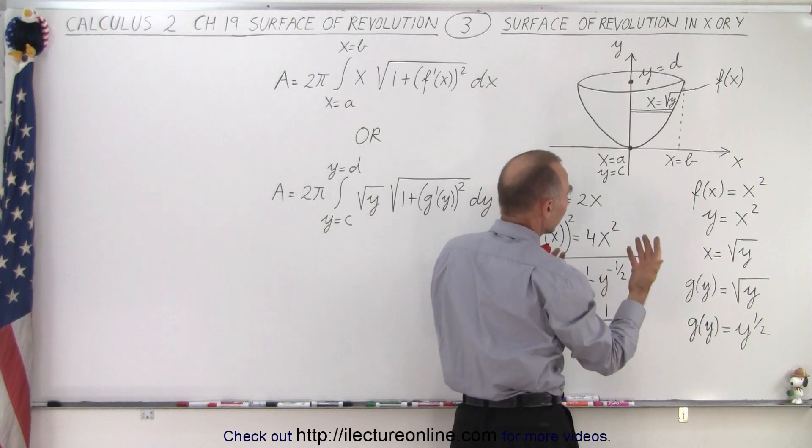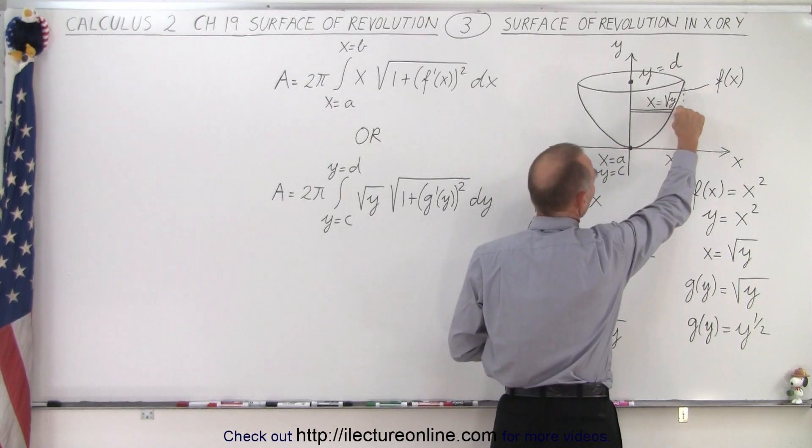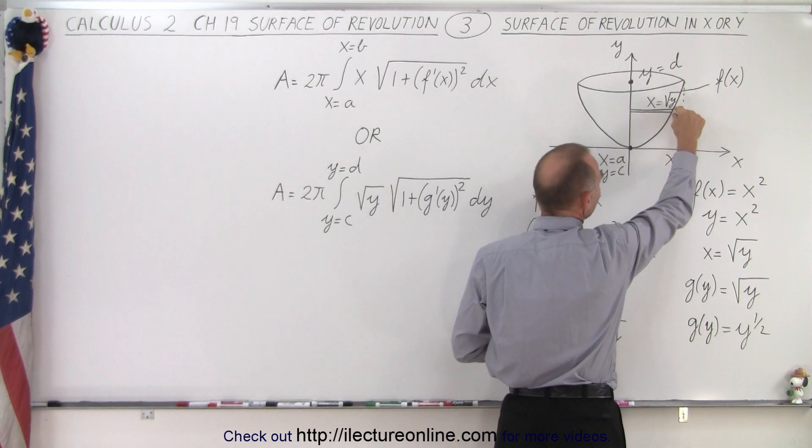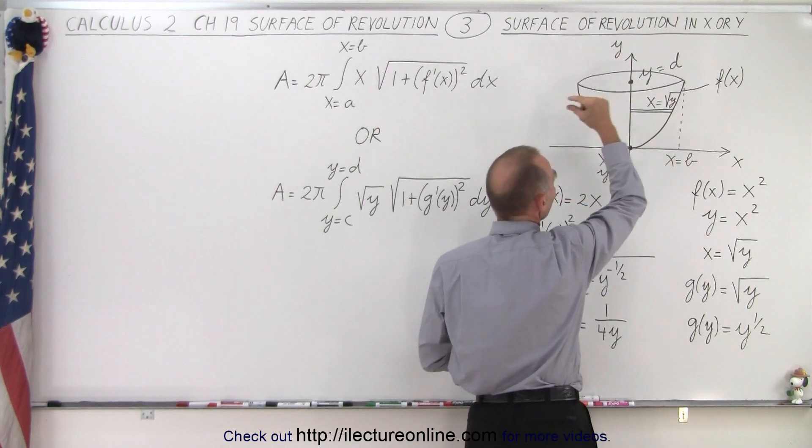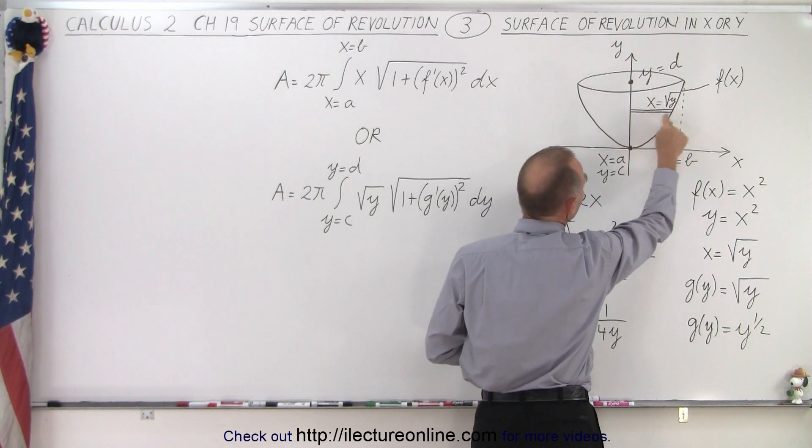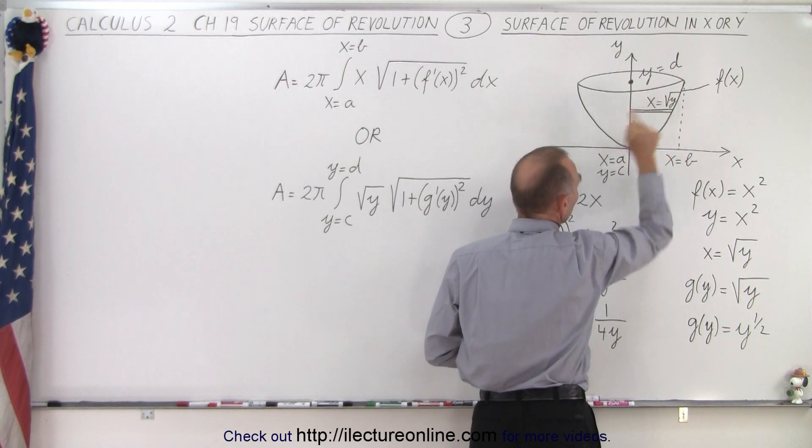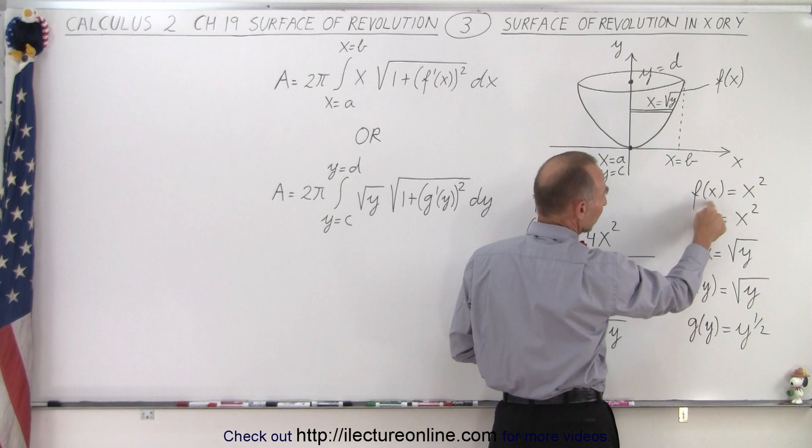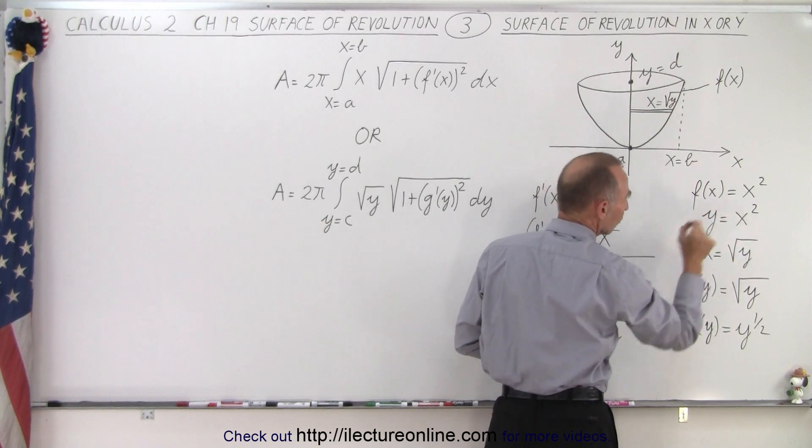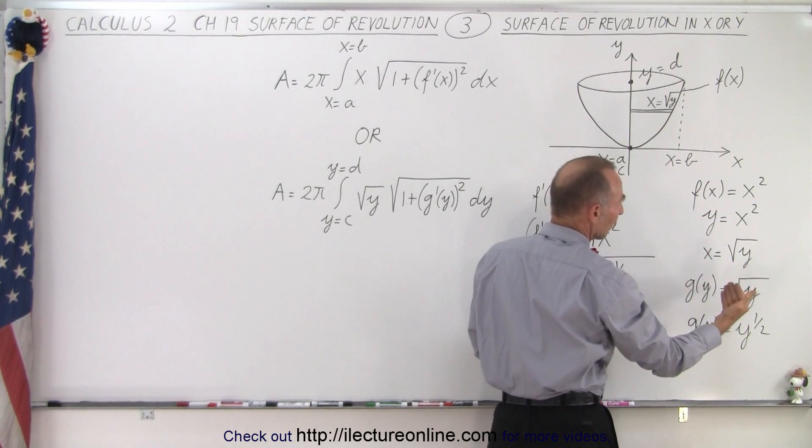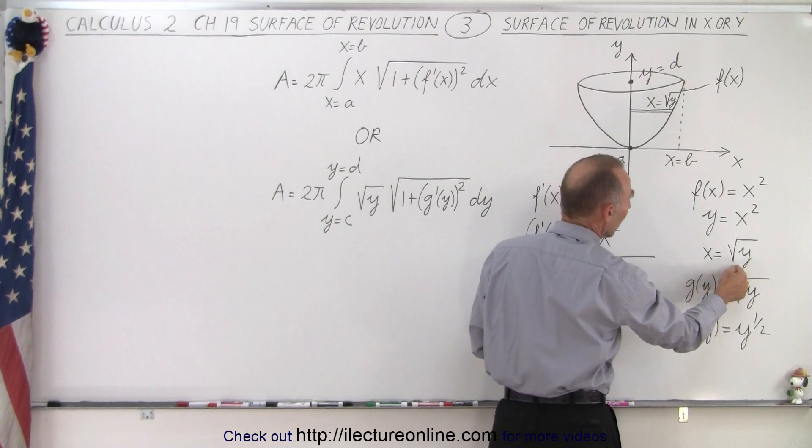Again, to find the area, what we're going to do is take a small little dl, a small little arc length dl, and revolve it around the y-axis. Notice that the radius here can either be expressed as x or as the square root of y, because if f(x) is x squared, that means y is x squared. We take the square root of both sides and end up at x equals the square root of y.